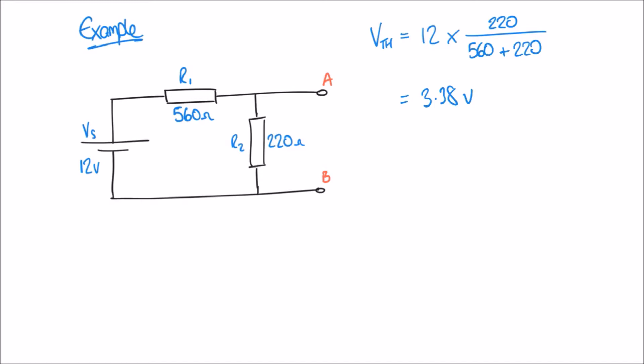Step two is a little bit more tricky because it involves thinking about our terminals and how we've labelled them. Step two says to short out any voltage sources and work out the total resistance from terminal A to terminal B. To short something out simply means to replace it with a wire — so rather than having our voltage source supplying 12 volts, we imagine we've just replaced it with a wire. I've short-circuited that cell, and now I've just got a circuit of two resistors, and we've got to work out the total resistance from terminal A to terminal B.